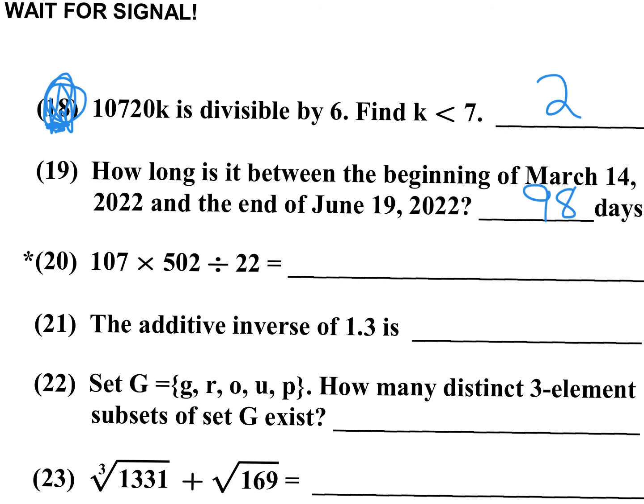Number 20 is an approximation: 107 times 502 divided by 22. 22 goes into 110 five times, so I'll round 107 to 110 and 502 to 500. Dividing 110 by 22 gives 5. Five times 500 is 2,500. That's well within the plus or minus 5% range, so 2,500 is a good answer.